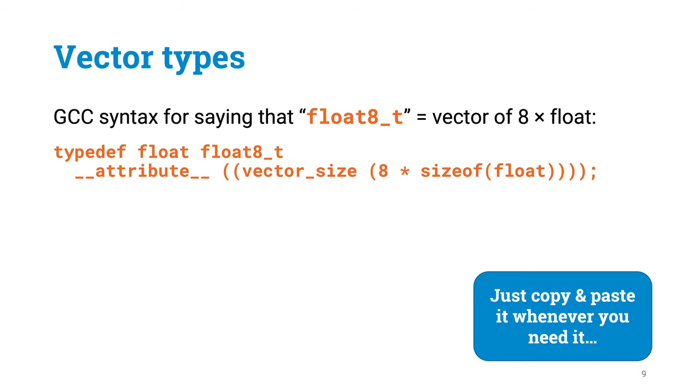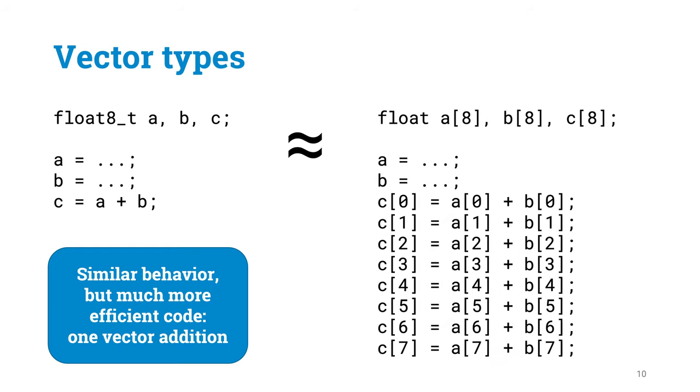Unfortunately, the syntax of defining a vector type in GCC is pretty ugly, but you don't really need to remember it or see it that often either. Just copy-paste this fragment to the beginning of your program. And from then on, you can just use this type float8d whenever you want to define variables that are vectors. And now it is easy. You can think of float8d as a type that behaves a lot like an array of 8 floating-point numbers. But you can also write things like a plus b, and it will do element-wise addition for these two arrays.